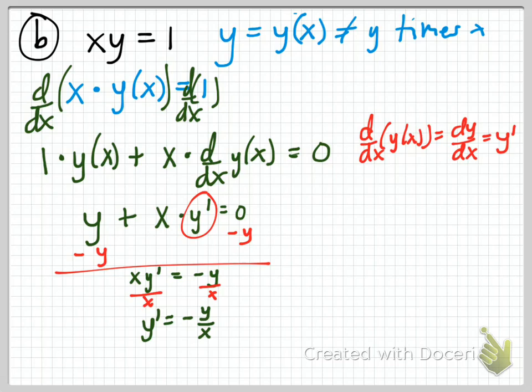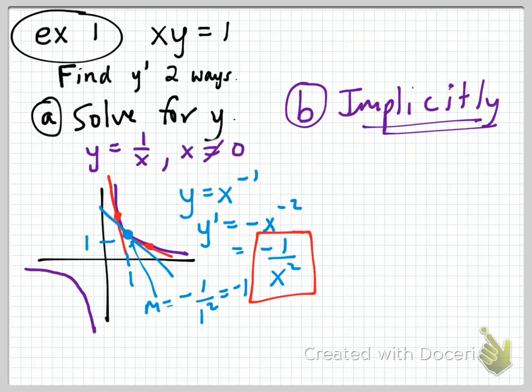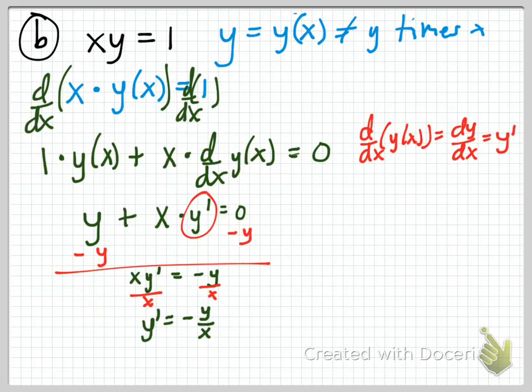That's interesting — in part A we got y prime equals negative 1 over x squared, and now we get y prime equals negative y over x. They're both right, and we want to confirm that. Let's look at the same point: when x equals 1, the derivative was negative 1.